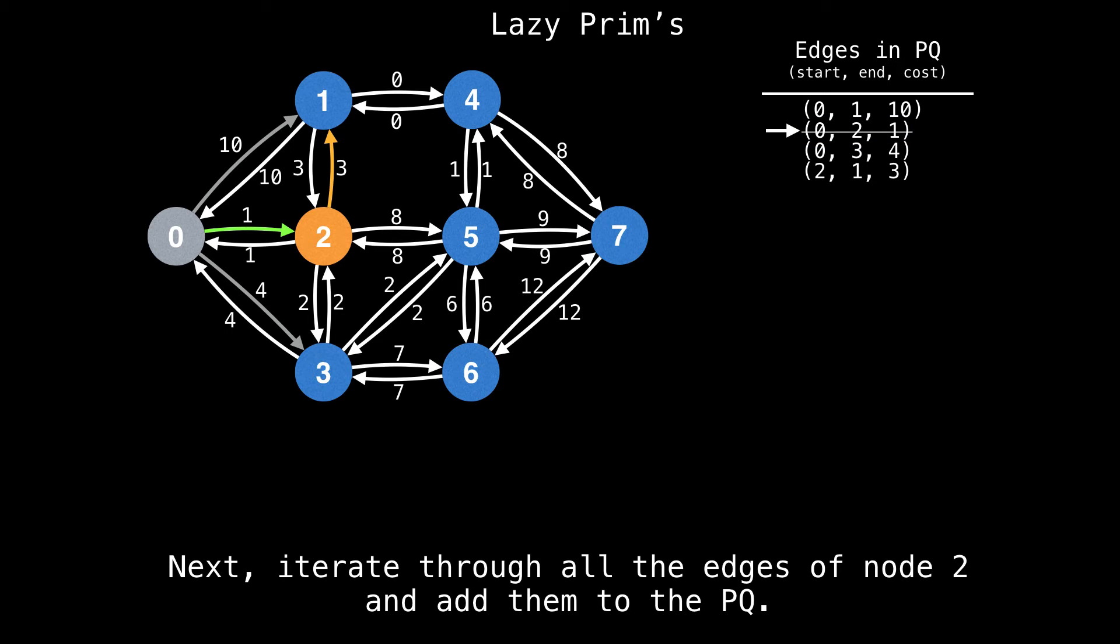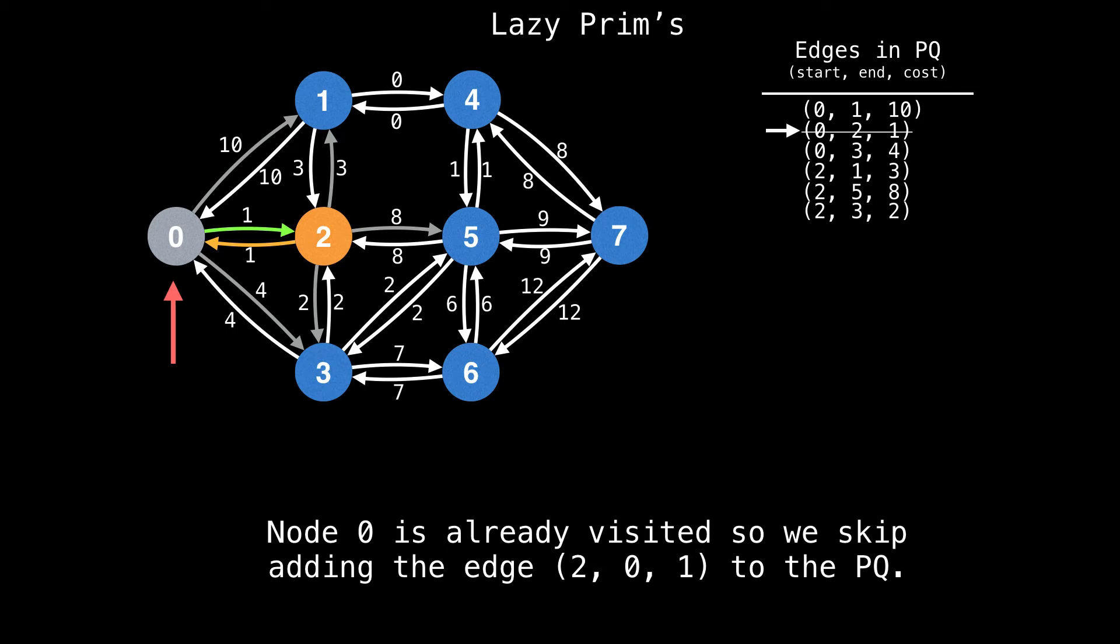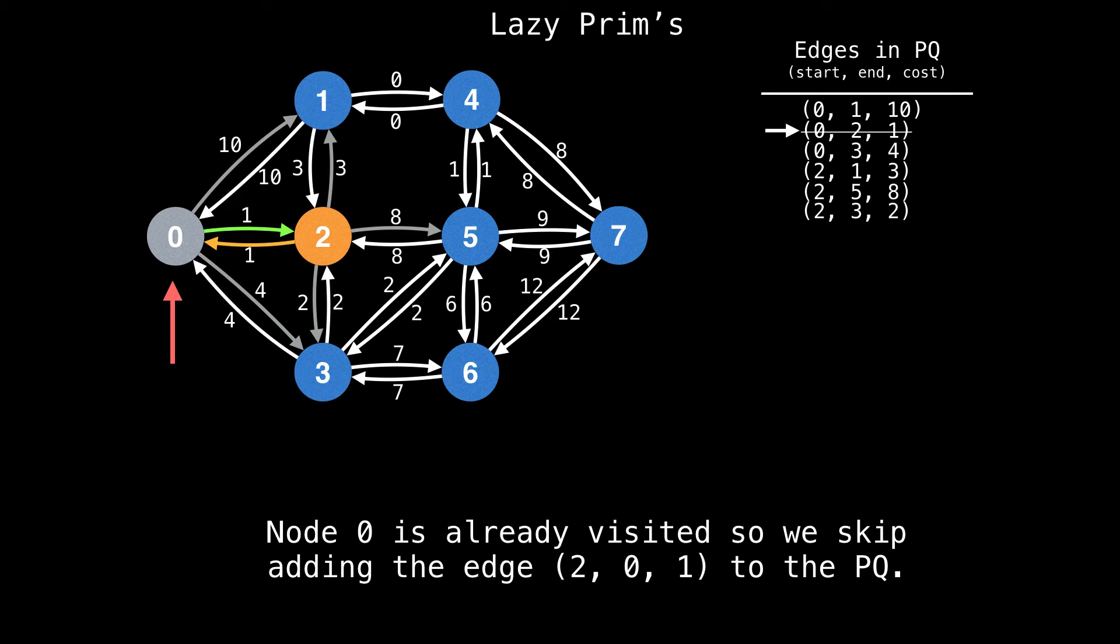So next, we iterate through all the edges of node two and add them to the priority queue. While iterating over the outgoing edges of node two, realize that we may encounter edges which point to already visited nodes. We do not want to add these to the priority queue because they are of no use.